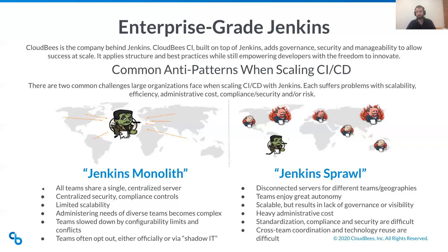The second anti-pattern is Jenkins sprawl. Giving each team their own Jenkins controller resolves some monolith issues, allowing individual integrations and best practices. However, this is also an anti-pattern because you lose security and compliance — now you have a sprawling landscape of servers requiring a bigger team to manage across all developers and operations teams. You also lose the ability to set standard operations, centralized authentication, or centralized role-based access control. It often evolves into a Wild West installation of Jenkins.